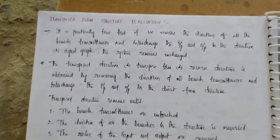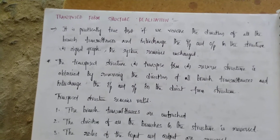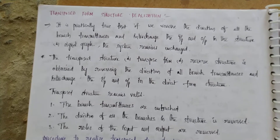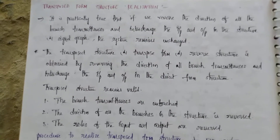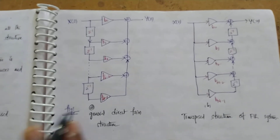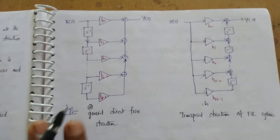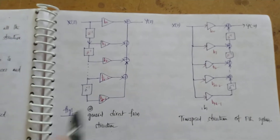The next topic is transposed form structure. The transposed form structure is nothing but a direct form one structure with some changes. In the direct form one structure, we need to make certain changes, and then we will get the transposed structure.